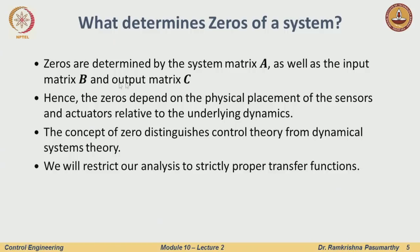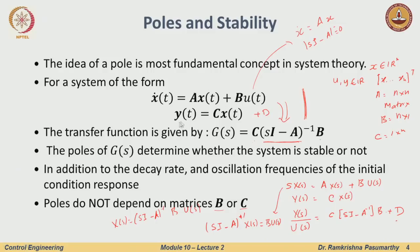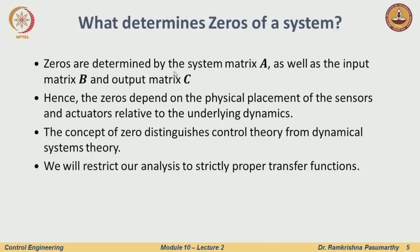Zeros, by contrast, are determined by the system matrix A as well as the input matrix B and the output matrix C. The input matrix determines how the input enters the system — via placement of actuators. The output matrix C determines where sensors are placed. So practically, zeros depend on the physical placement of sensors and actuators relative to the underlying dynamics.